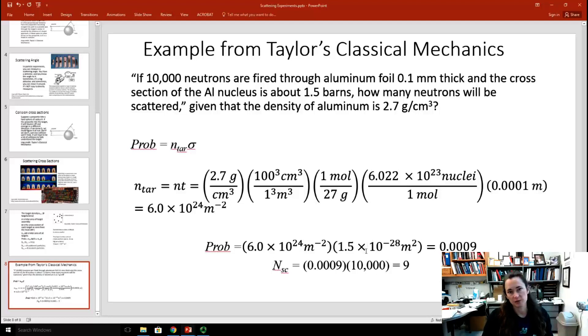What we need is we need the number scattered if the number incident is 10,000. Well, remember, n-scatter divided by n-incident gives us the probability. So, I can solve for the number scattered by multiplying .0009 times the number of particles incident, 10,000, and get 9.